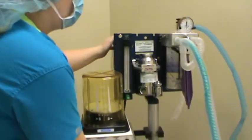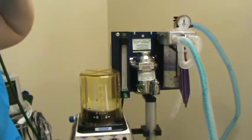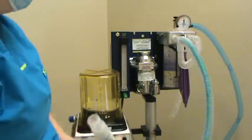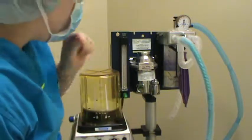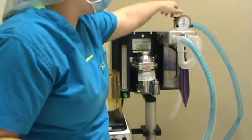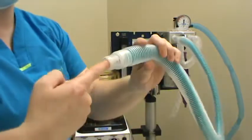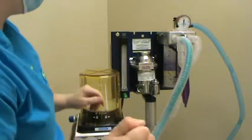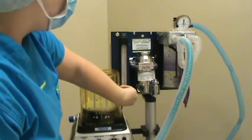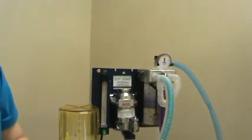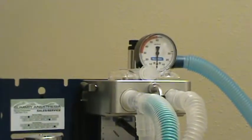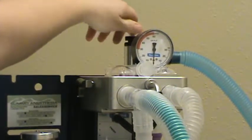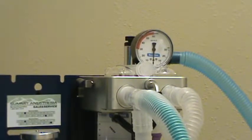The last thing we're going to do is perform a low pressure test to be sure that the machine can hold pressure and that there's no leaks anywhere in our system. We're going to close the pop-off valve, occlude the tube with our finger, turn on the oxygen, and fill our bag to about 30 centimeters of water and see if it holds.